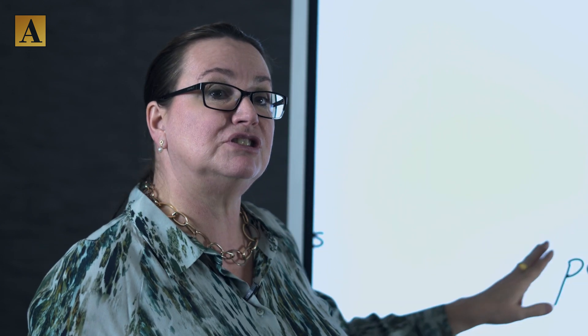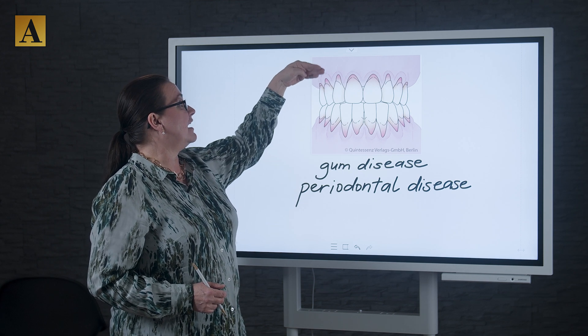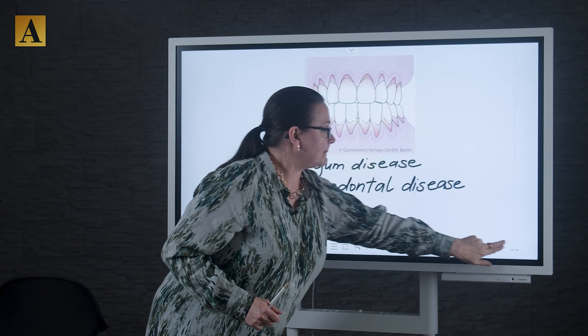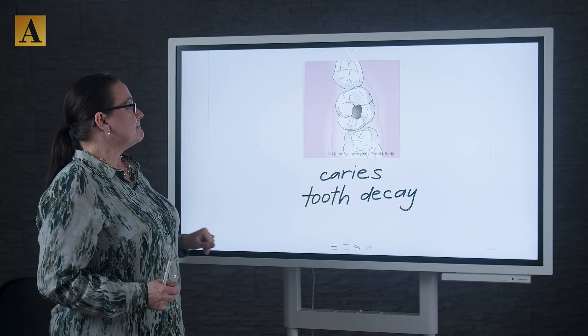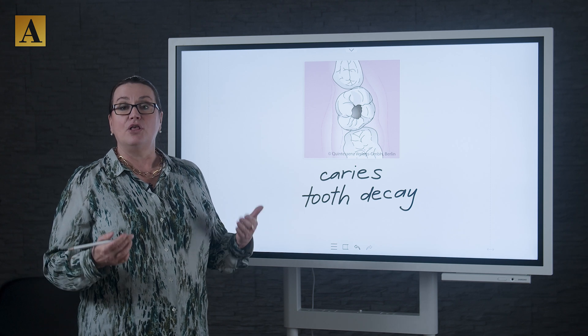If you can see a lot of the roots, then we're talking about gum disease or periodontal disease. In this case, the gums have receded away from the teeth. One of the classics in dentistry is caries or tooth decay.